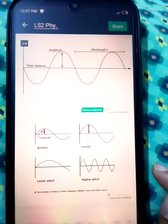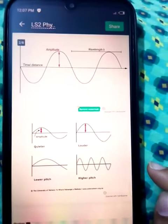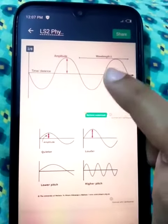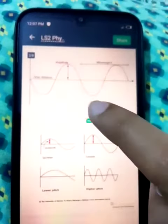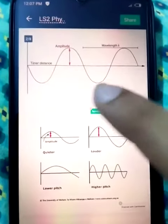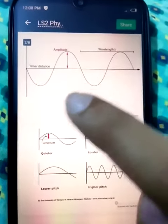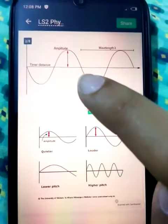Assalamu alaikum. In our today's LS2 Physics class, we discuss about amplitude and wavelength. Wavelength is the length of the wave a crest and trough covers. After that, we discuss about amplitude. Amplitude is the height of the wave.